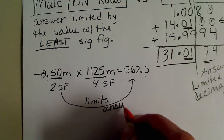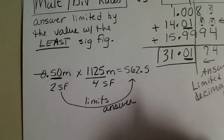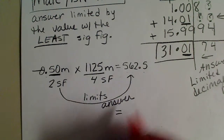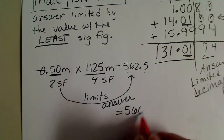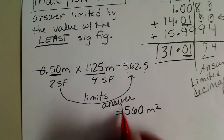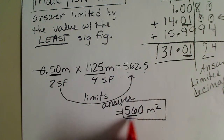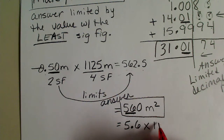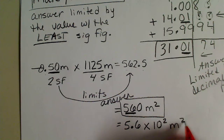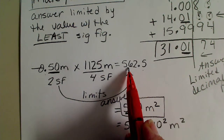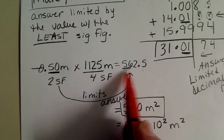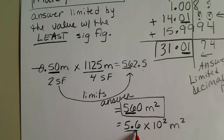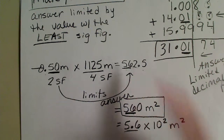We could write the answer 562.5 in scientific notation, or we could just round to the ones place and call this 560 square meters — there are our two significant figures. A sure way to always get the number of significant figures correct is to put the answer in scientific notation. Moving the decimal two places to the left, we can only report two significant figures: 5.6 times 10 squared.